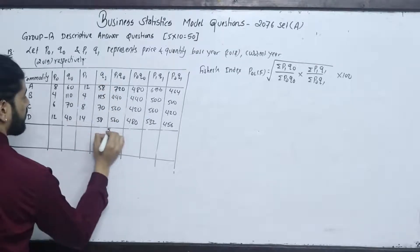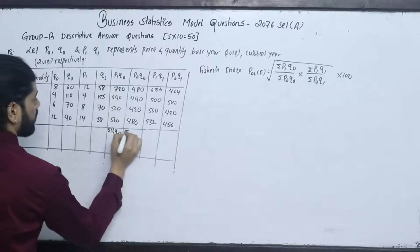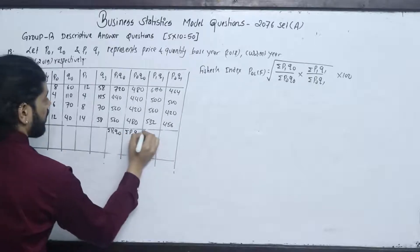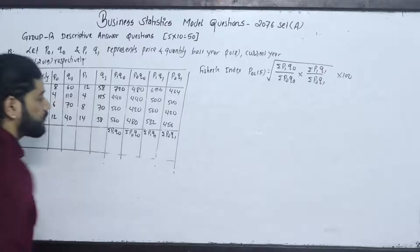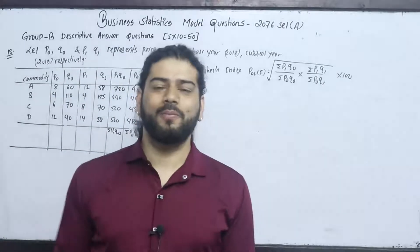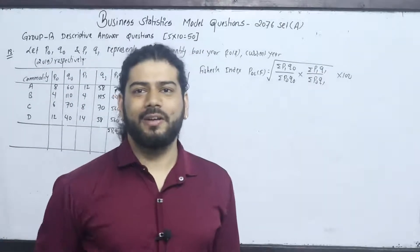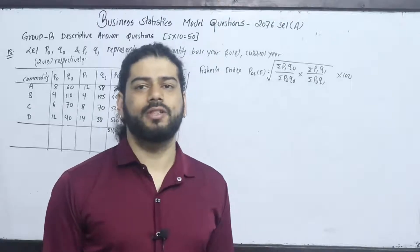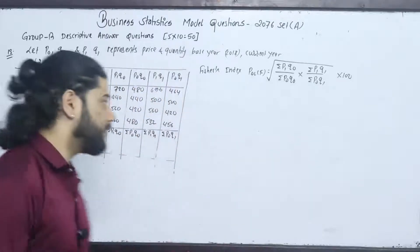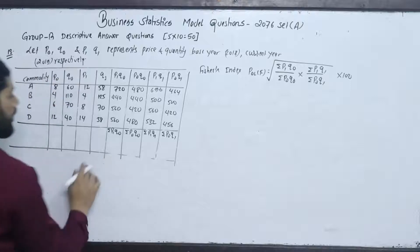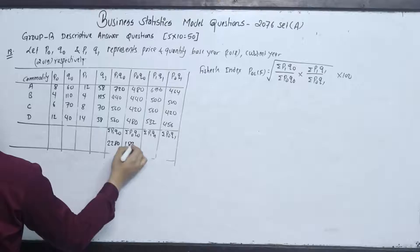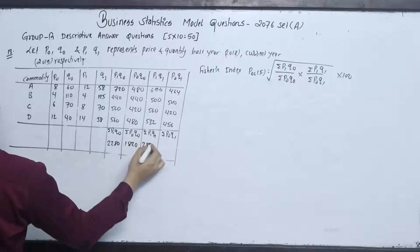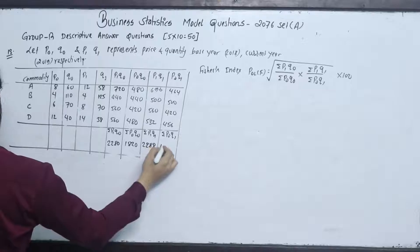Summation P1Q0, summation P0Q0, summation P1Q1, summation P0Q1 — the values are: summation P1Q0 = 2280, summation P0Q0 = 1820, summation P1Q1 = 2288, summation P0Q1 = 1840.